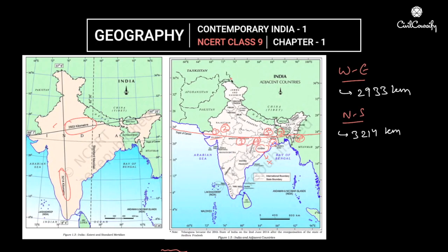The neighboring countries of India are Pakistan, Afghanistan — as you can see on the map. Tajikistan is not a neighboring country as it does not share common borders. Then there is Tibet, China, Nepal, Bhutan, Bangladesh, Sri Lanka, and the Maldives.